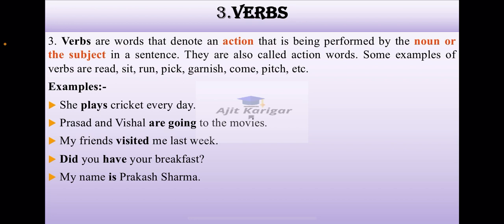The next part of speech is verb. Verbs are words that denote an action that is being performed by the noun or the subject. In a sentence, they are also called action words. Some examples of verbs are read, sit, run, pick, garnish, come, pitch, going. These are all the examples of verbs.